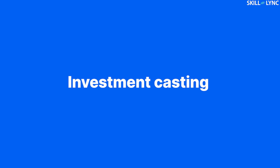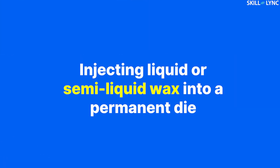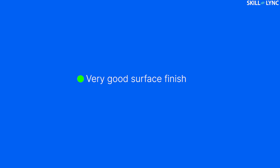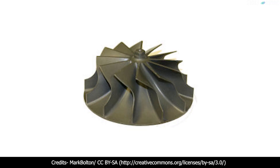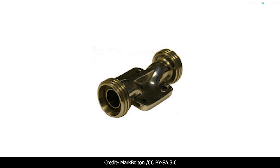Now let's move to investment casting. In this casting process, we can mass-produce patterns by injecting liquid or semi-liquid wax into a permanent die. With this method, parts with very good surface finish and dimensional accuracy can be obtained. Investment casting is widely used in manufacturing precision equipment, complex geometries, and for precious metals.